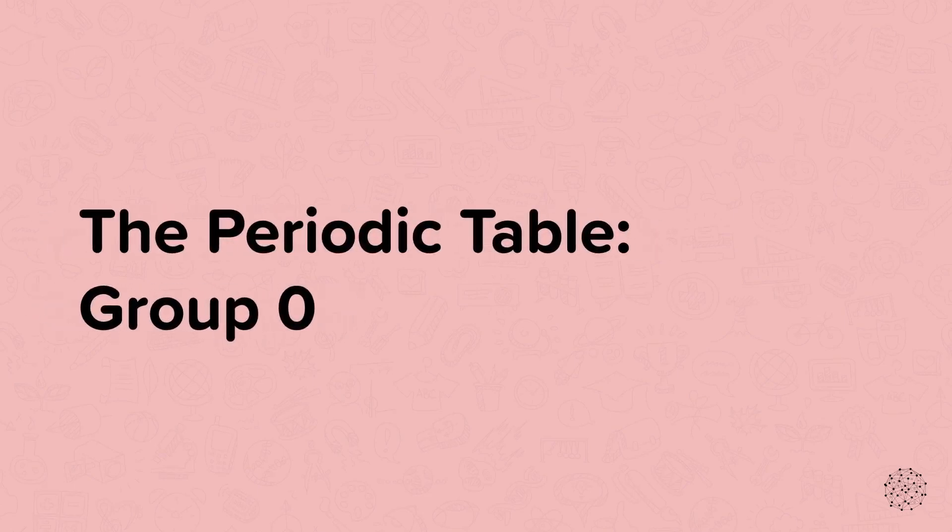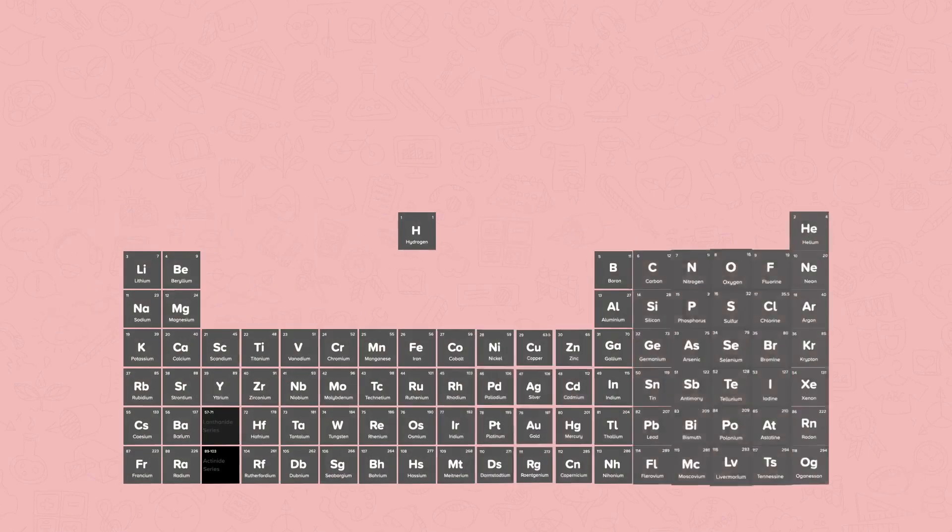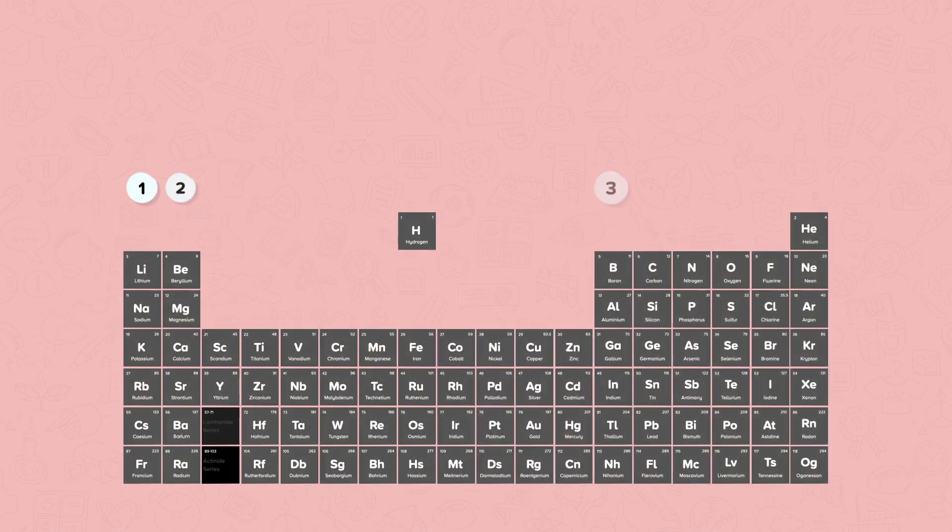In this nugget we're going to look at group 0 of the periodic table. The groups on the periodic table are the columns and they tell us how many electrons are in the outer shell of the atom.